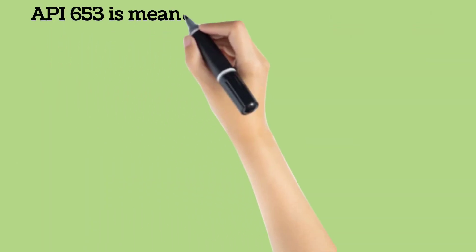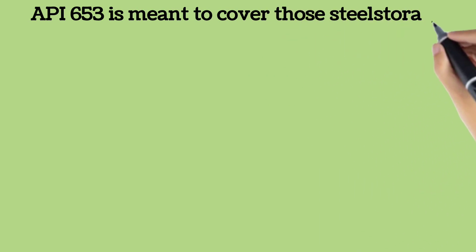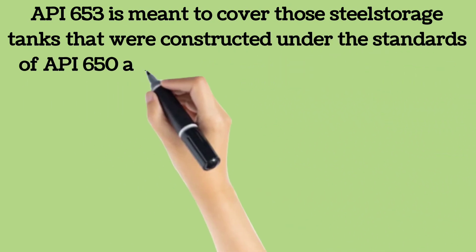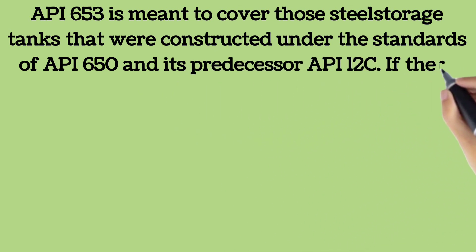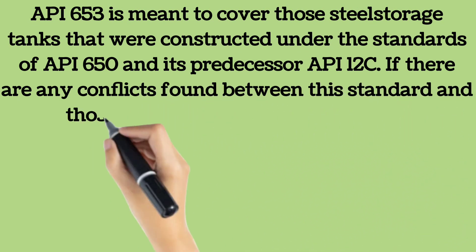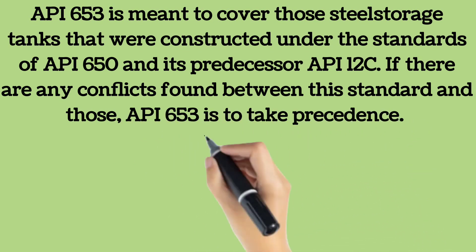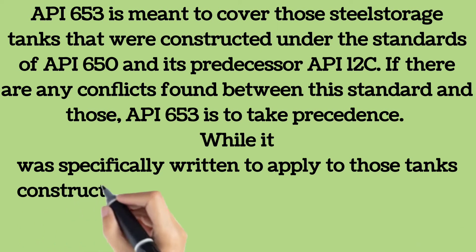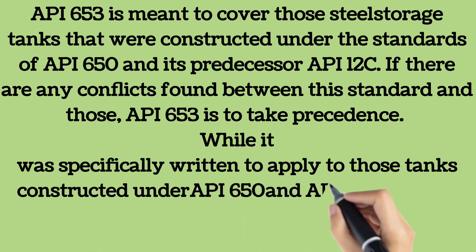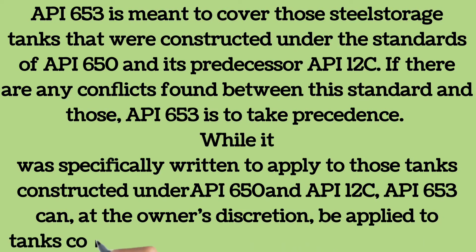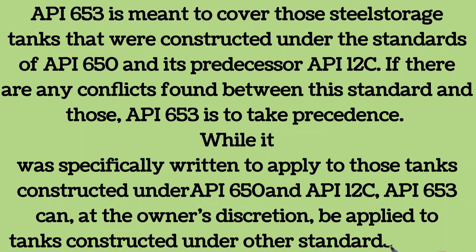The requirements in API 653 are meant to cover steel storage tanks constructed under API 650 and its predecessor API 12C. If any conflicts are found between the standard and those, API 653 takes precedence. While specifically written for tanks under API 650 and API 12C, API 653 can, at the owner's discretion, be applied to tanks constructed under other standards as well. The API 653 inspector must have broad knowledge of tank inspection and repair, satisfying minimum qualifications specified in API 653 — Tank Inspection, Repair, Alteration, and Reconstruction.